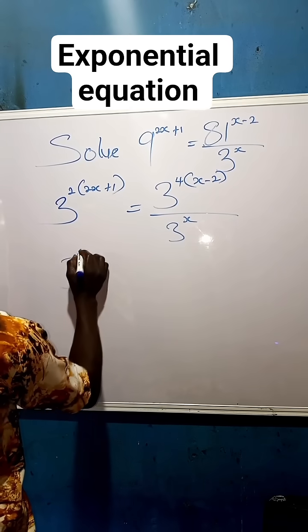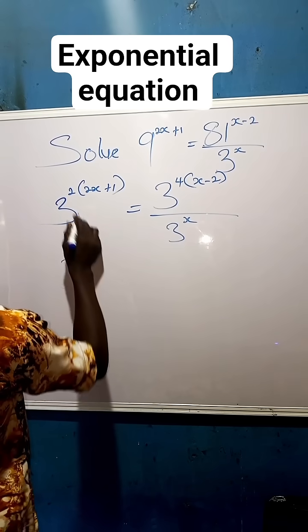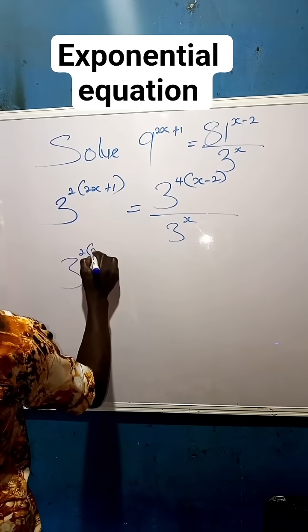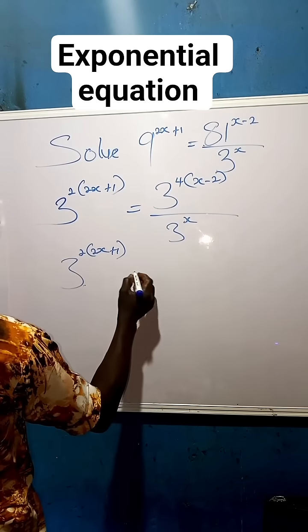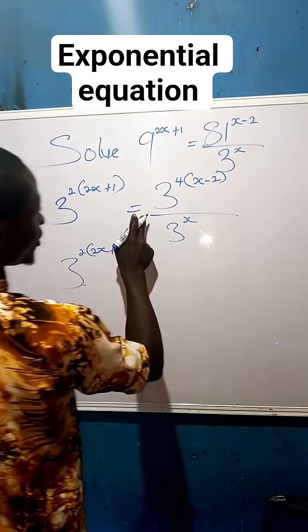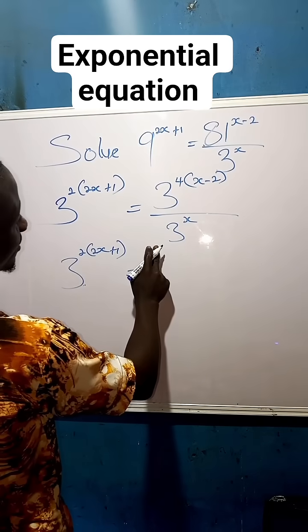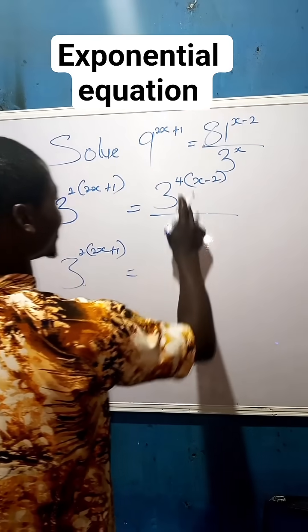By moving forward, we say 3 to the power of 2 times (2x plus 1) equals to... So in laws of indices, whenever we have this division and they are the same base...